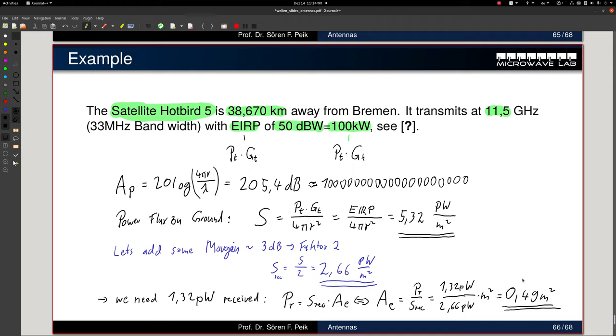So I need an effective area of 0.49 square meter in order to receive the signal. which is, well, when we made it a parabolic dish, a dish with diameter of 80 cm. That's roughly this area. So you see, when you have an antenna with 80 cm diameter, you can receive Hotbird 5 nicely. Since I put the margin in there, the actual size of the antenna is about 60 cm. Maybe I was too conservative with this number as well.